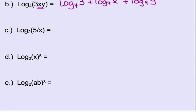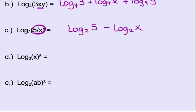Example C: the operation is division, which is our second property. Since it's division, we're going to subtract these logarithms. You have a logarithm base 2 of 5 minus the other logarithm. Remember, division inside the log means subtraction when expanded.